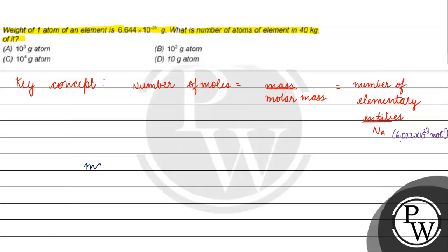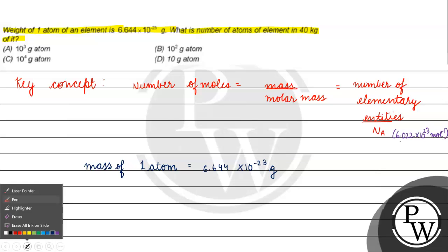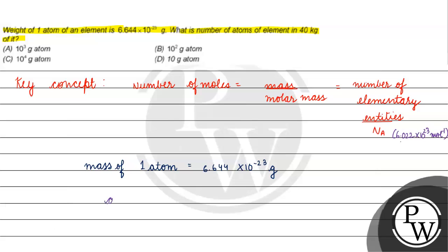Now, mass of one atom is how much? It is 6.644 into 10 raised to the power minus 23 gram. Now, what can we derive? Atomic mass can we derive? Atomic mass will basically equal mass into Avogadro's number.